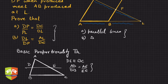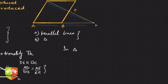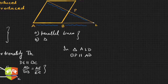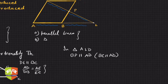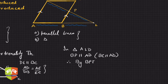Here we have a similar type of triangle. In triangle ALD, BP is parallel to AD. This is because BC is parallel to AD — they are opposite sides of a parallelogram — so this side is parallel to this side. Therefore, by BPT, we can apply the theorem in this triangle.